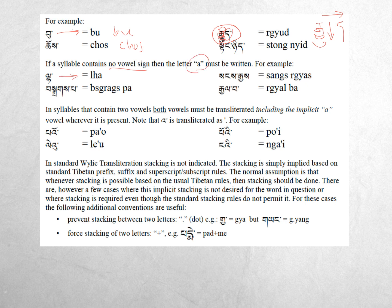If there's no vowel sign, take note that you have to write the letter 'a'. In this word you have to write 'la'. Similarly, in this stacked word there's no vowel marker, just an implied 'a' sound, so you do write the 'a'. Take note here that a-chung is transliterated with an apostrophe. So when you have something like this that has two vowels, pa and o, you do write them both and you use the apostrophe to represent the small a.